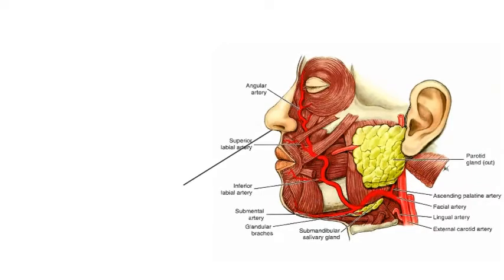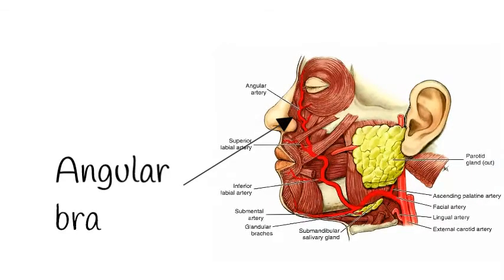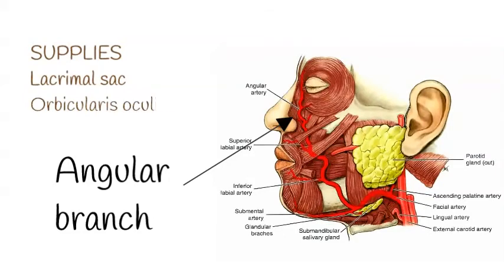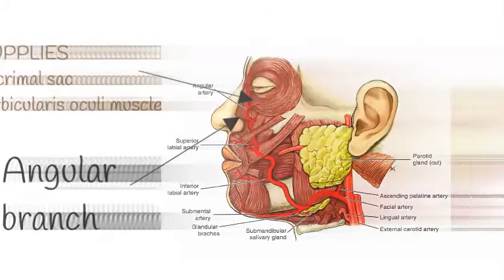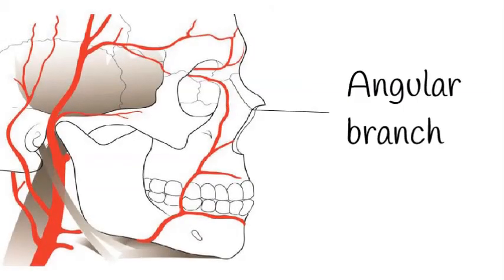The angular artery is the final and terminal branch of the facial artery. On the cheek, the artery supplies the lacrimal sac and orbicularis oculi. It ascends to the medial angle of the orbit and ends by anastomosing with the dorsal nasal branch of the ophthalmic artery.